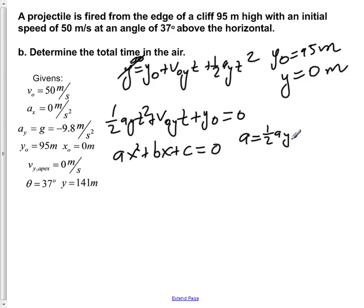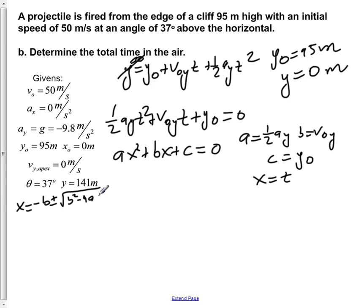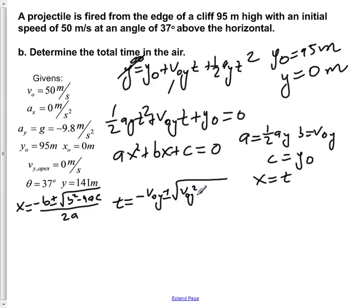So a equals ½·Ay, b equals v₀y, c equals y₀, and x equals T. The quadratic formula becomes T = (−v₀y ± √(v₀y² − 4·(½·Ay)·y₀)) / (2·(½·Ay)), where a is ½·Ay throughout.